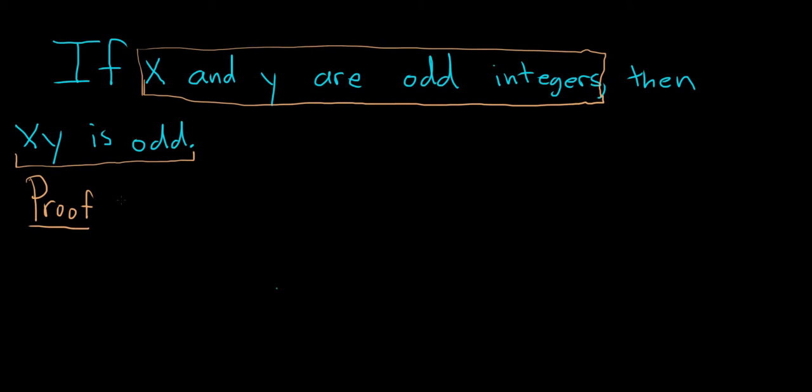So you start by writing something like suppose x and y are odd integers. Now, this is exactly what it says in the problem. You can be a little bit creative with your language.